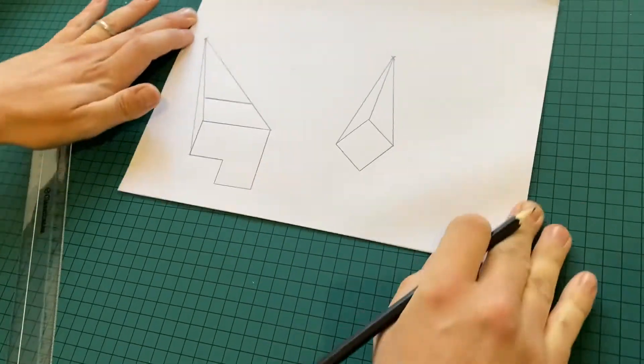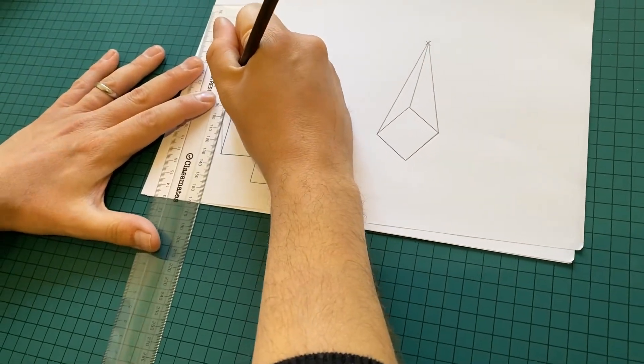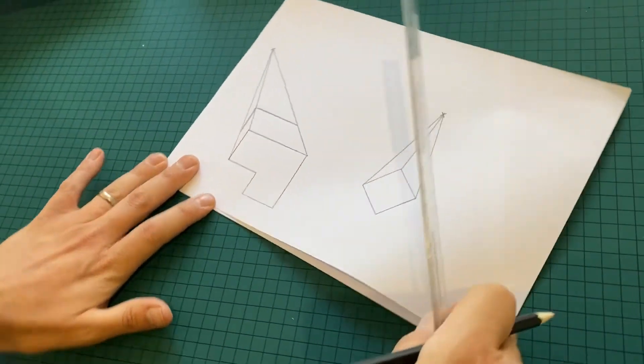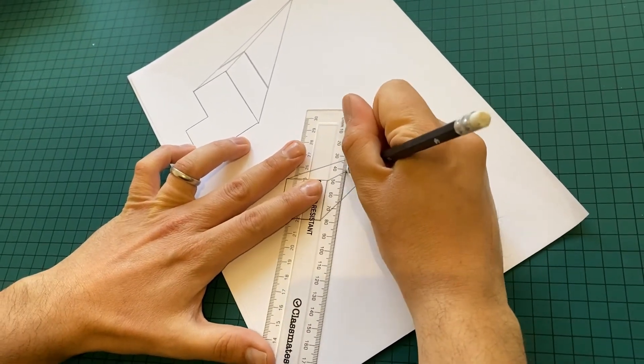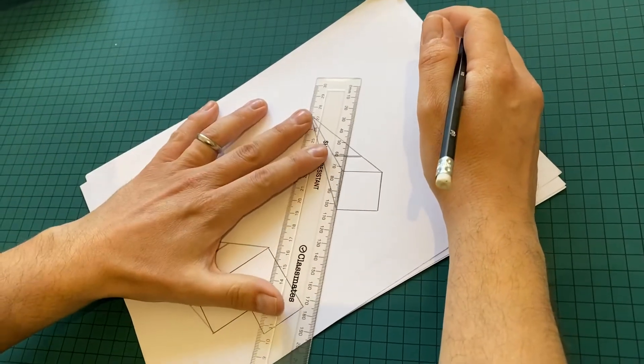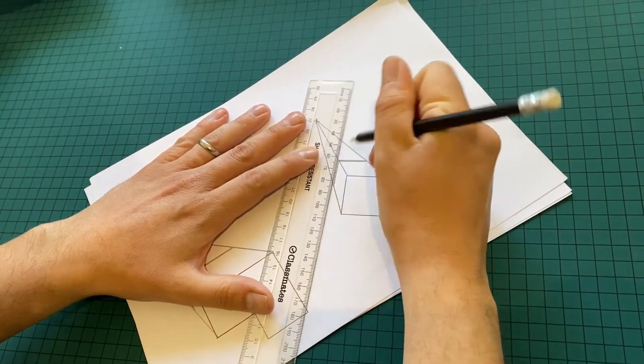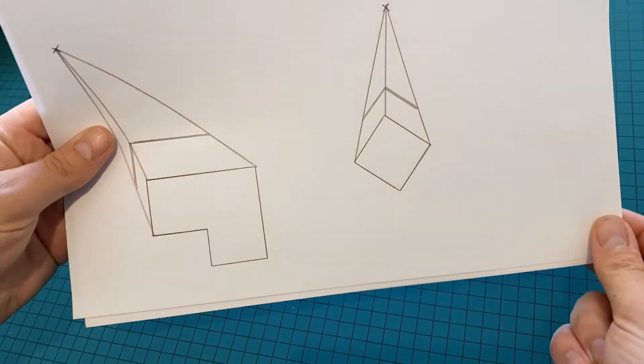Once you've done that, you need to draw your parallel lines. So if you can see with the first shape, I'm drawing the two parallel lines. And again, with the second shape, there's two parallel lines. And you can see now they've taken shape, and they're looking like 3D objects. How far back you put those parallel lines will determine the depth of your shape.